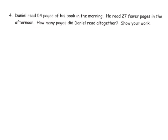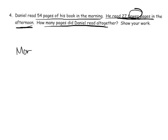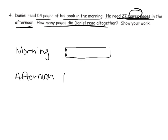And the last problem for this video. Daniel read 54 pages of his book in the morning. He read 27 fewer pages in the afternoon. How many pages did Daniel read all together? When we start, the word fewer means we're going to be comparing. We're going to compare the morning with the afternoon. The moment we start comparing two things, I'm going to draw a separated tape diagram. When I draw a separated tape diagram, I always begin with the two bars being identical in length.